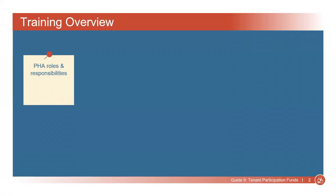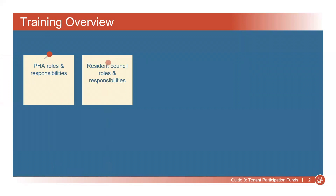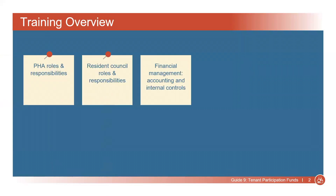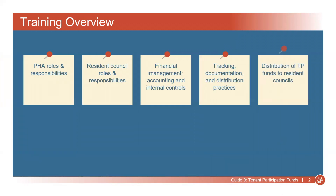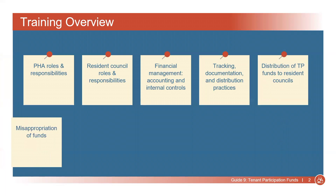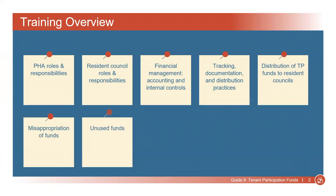This training will cover the following subjects related to Tenant Participation Funds, which throughout the training may be referred to as TP Funds: the Public Housing Agency, or PHA, Roles and Responsibilities; Resident Council Roles and Responsibilities; Financial Management of TP Funds, including Accounting and Internal Controls; Tracking, Documentation, and Practices for Paying Out Funds; Distribution of TP Funds to Resident Councils; What to do if there has been a misappropriation of funds; Unused Funds; and Audits.